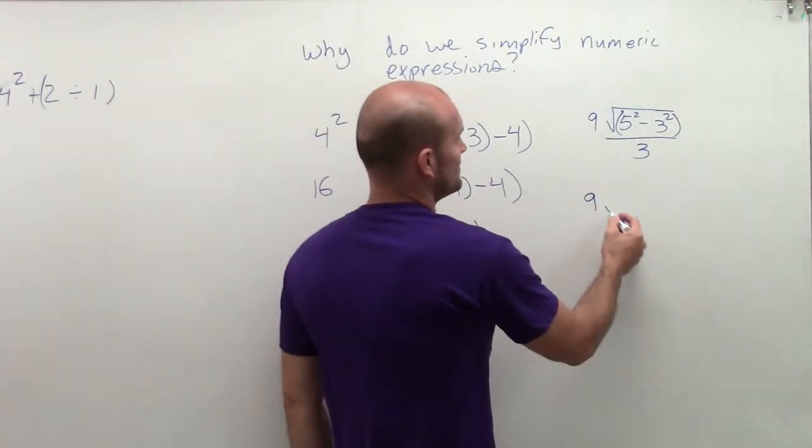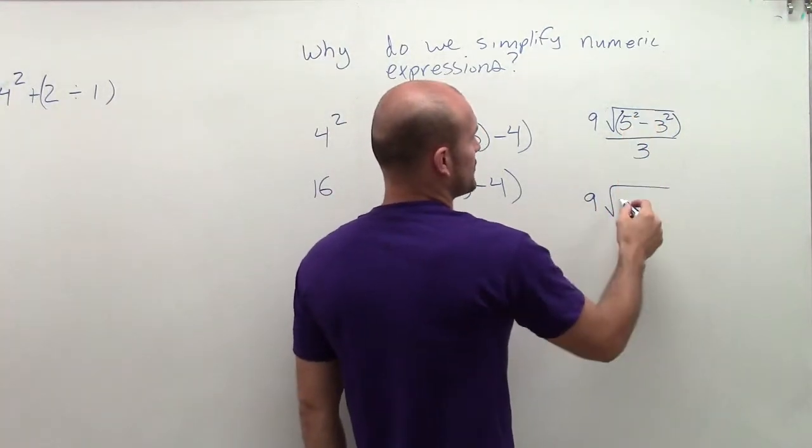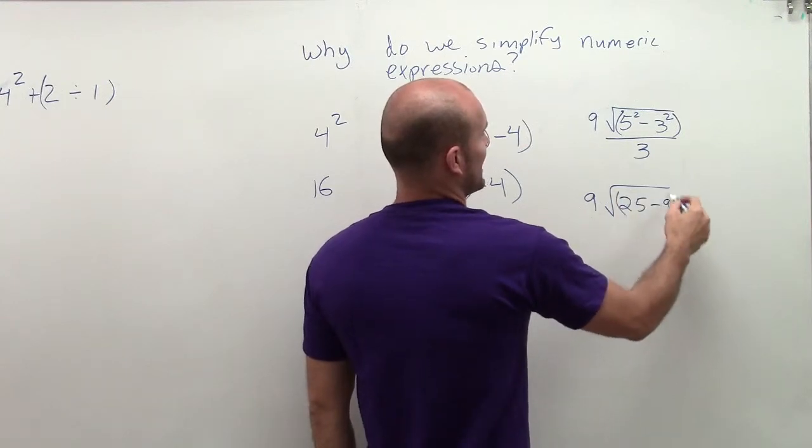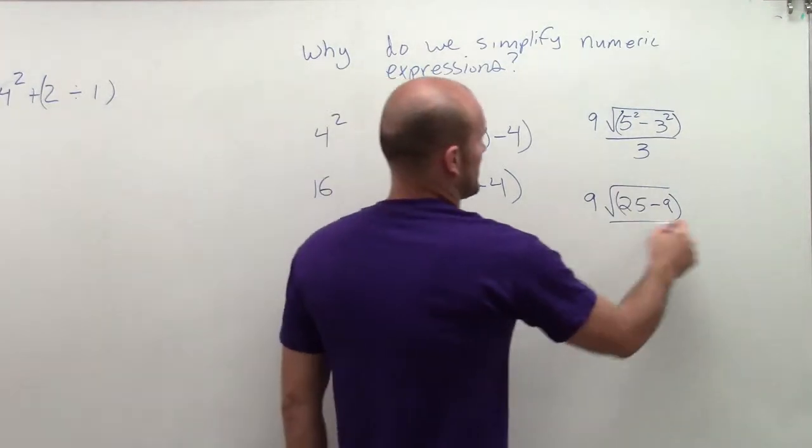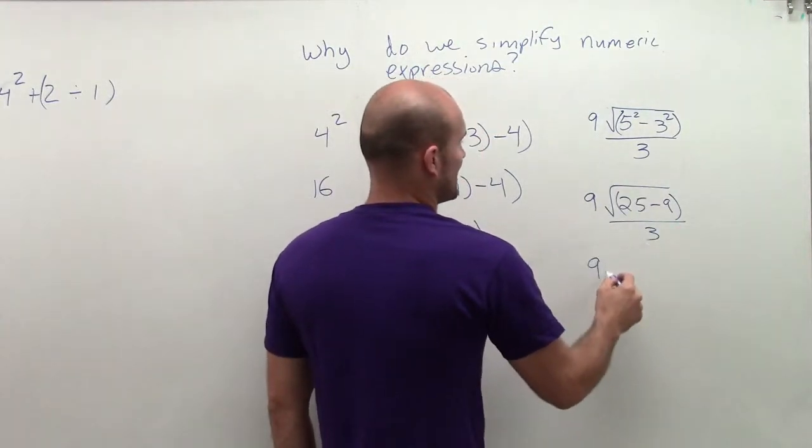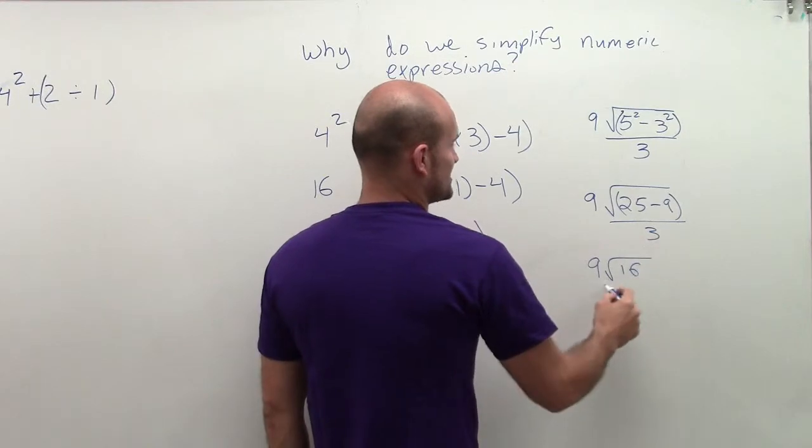So I have 9 square root 5 squared, which is 25 minus 9. Still inside my parentheses, I'm going to subtract, divide by 3. So I have 9, subtract, equals 16, and now divide by 3.